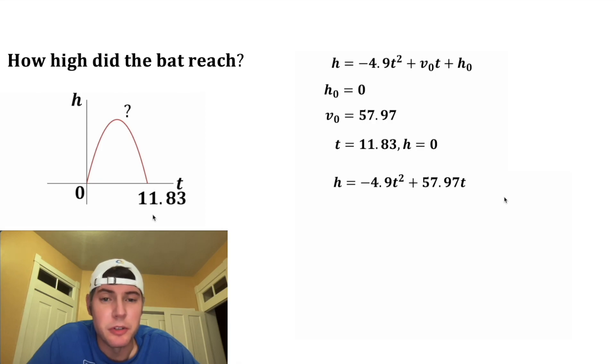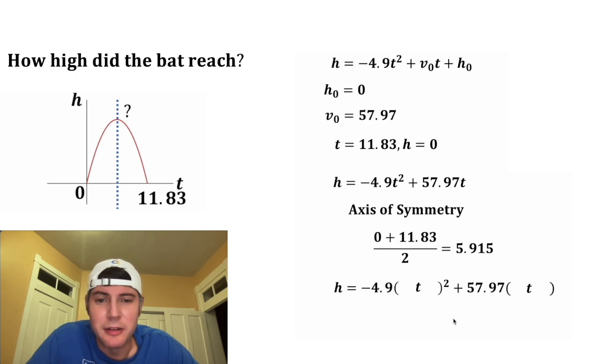Which we know is 11.83. The axis of symmetry will go through that maximum point. We can find this axis of symmetry by taking the average of these two x-intercepts, and that's going to give us 5.915. And so now we take our equation again, plug in 5.915 for t.